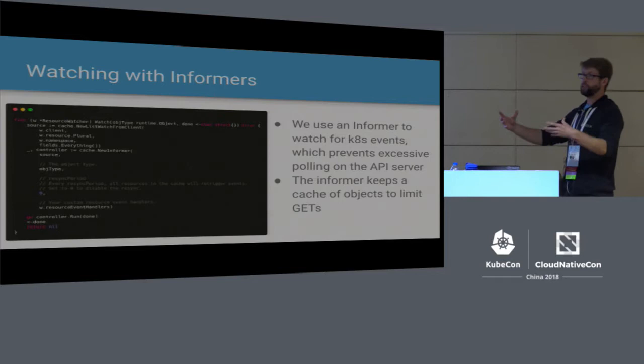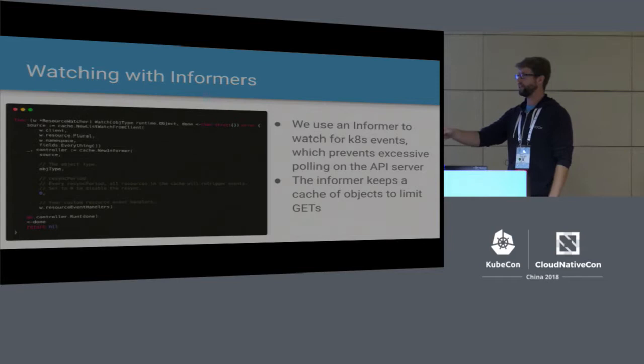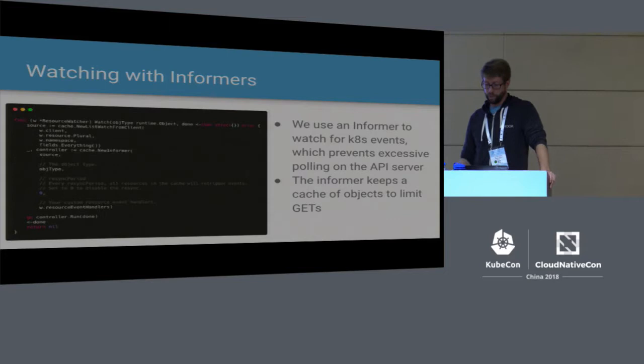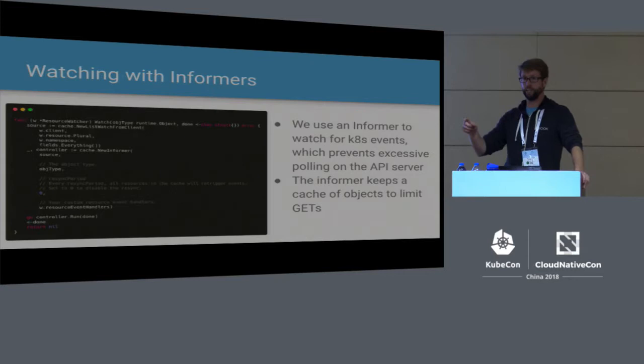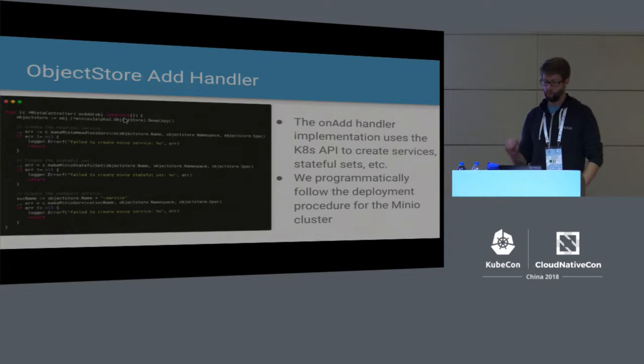Informers are a very efficient way to get information from the Kubernetes API server — you're not sitting there polling over and over asking for the latest information. Informers keep a local cache that can be read from locally to prevent burden of gets on the API server. If every single component inside Kubernetes did a get on the server whenever it needed information without caching anything locally, the cluster would come to a halt.